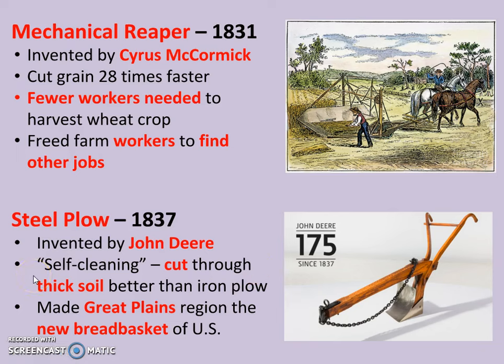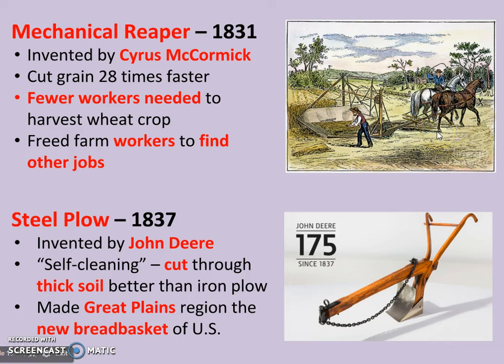Another agricultural machine was the mechanical reaper, invented in 1831 by Cyrus McCormick. Prior to it, grain had to be cut down and harvested by hand. The mechanical reaper allowed this to be done 28 times faster, so a few individuals using a reaper could do the work of 25 to 30 men. This meant fewer workers were needed to harvest crops, freeing up those extra workers to move to the cities and get jobs in factories — increasing urbanization.